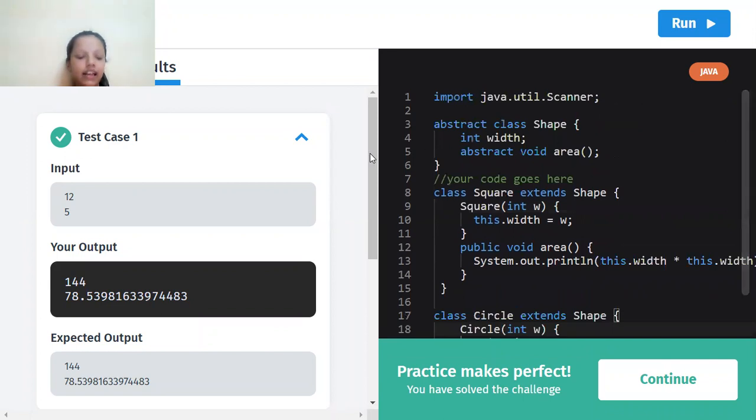So yeah, now let's see the test case. So the first one is 12, where 12 squared is 144. And for pi, Math.PI into 5 into 5 will be 78.53981633974483.